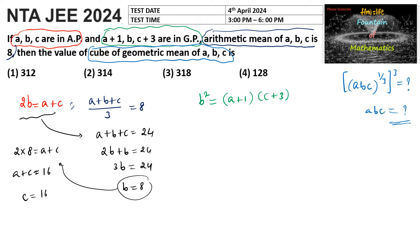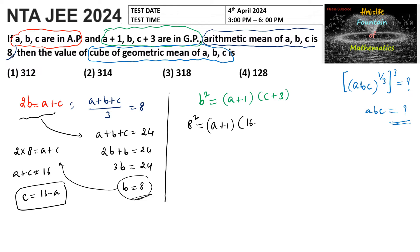So c is equal to 16 minus a. We have b equal to 8 and c equal to 16 minus a in terms of a. Substituting into the GP condition: b squared is 8 squared, which equals (a plus 1) into (c plus 3). With c equal to 16 minus a, this becomes 64 equals (a plus 1) into (19 minus a).